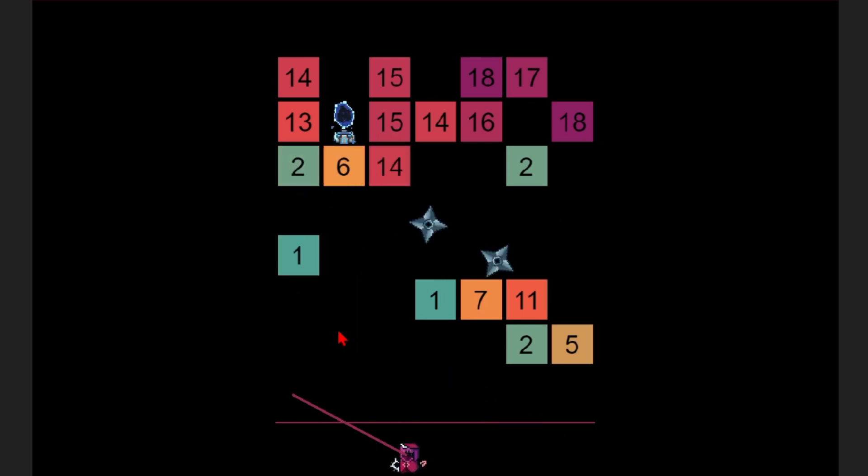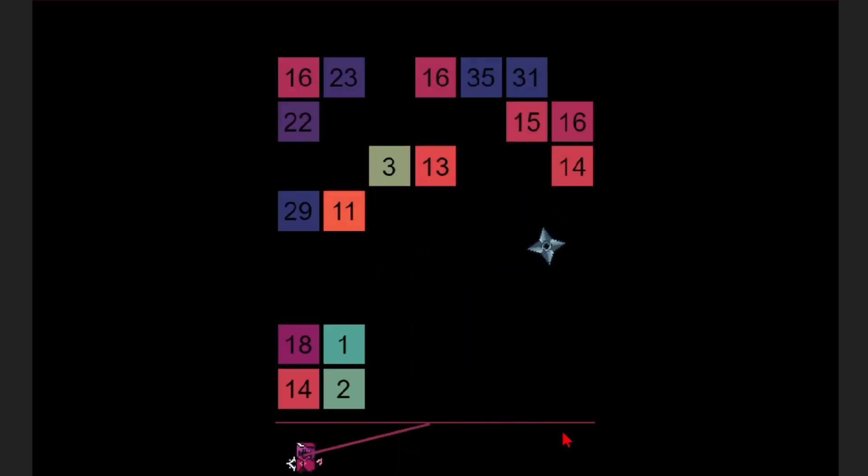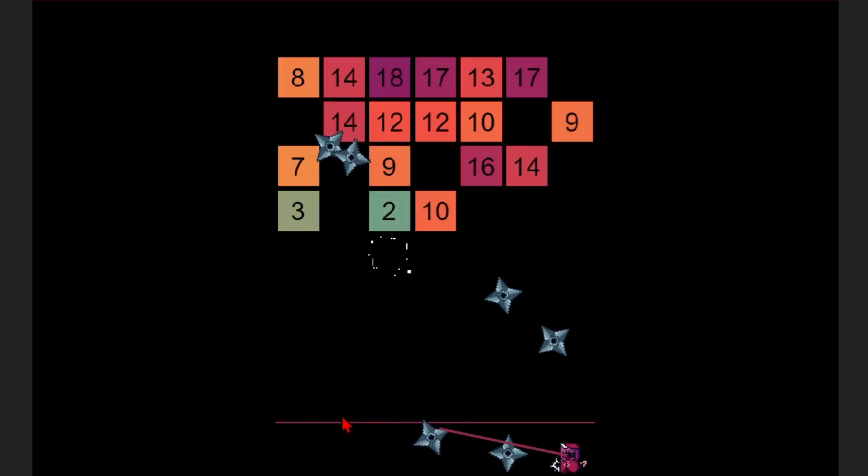When your stars leave the scene you get to throw them again but the blocks creep one tile further. When the blocks touch the lines you have to restart and your score gets reset. Simple rules.